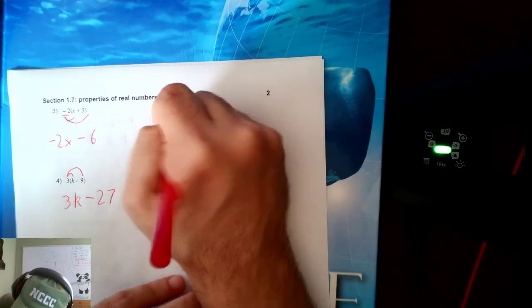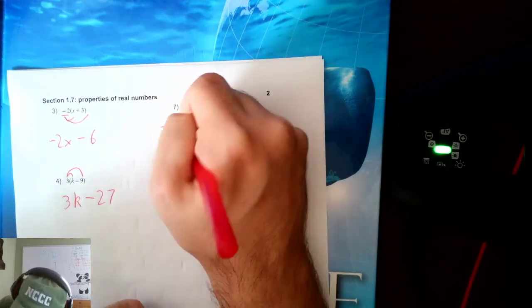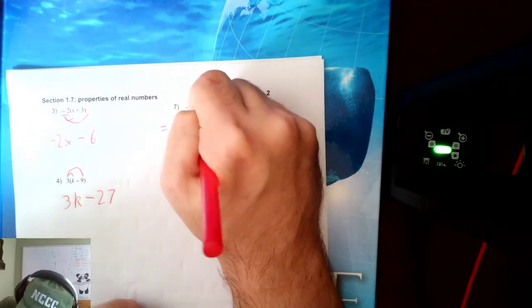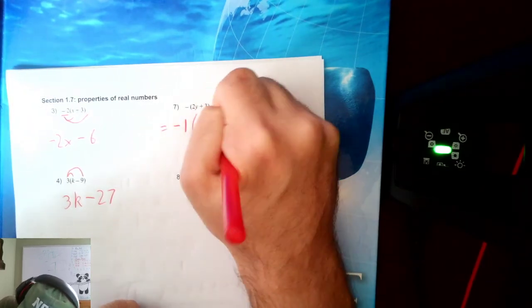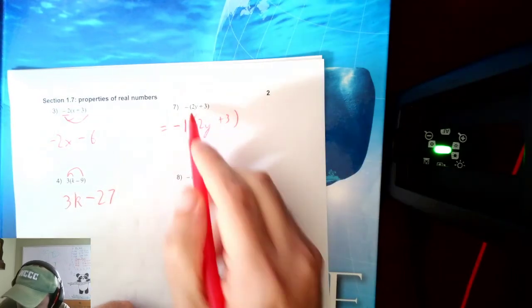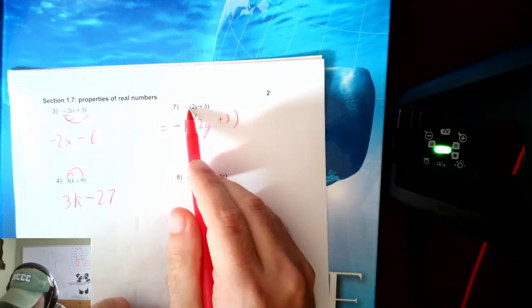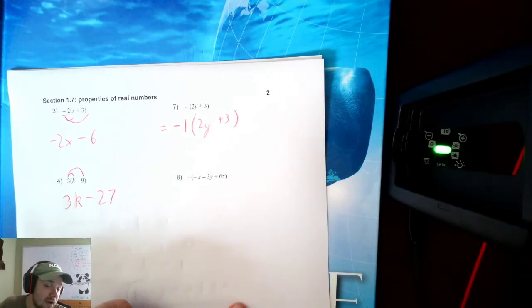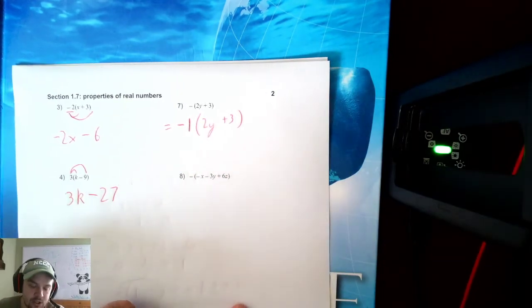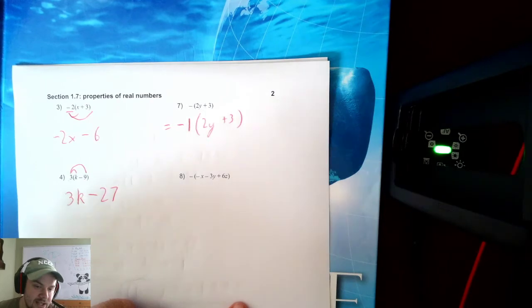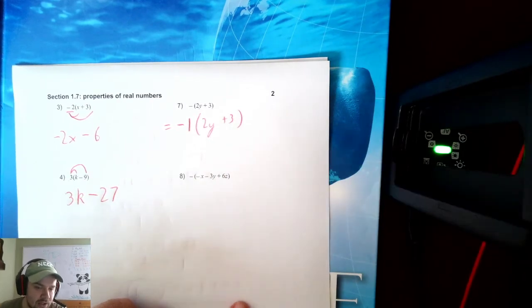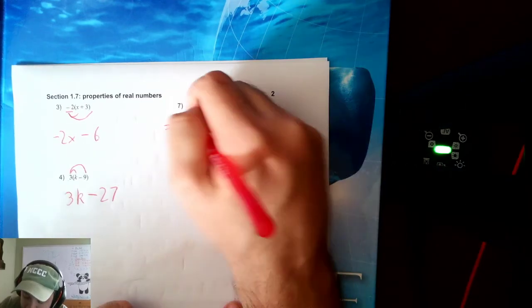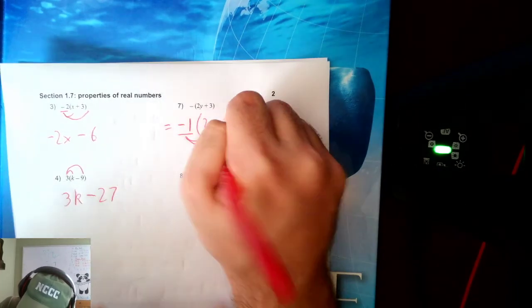Number 7. Negative parentheses 2Y plus 3. There's actually a hidden 1 hiding right there. Whenever you see a negative sign floating down from parentheses, there's actually a 1 hidden there. Because multiplying by 1 doesn't change the value. So we don't write the 1 until we need to use it. That's just mathematical notation. If we don't need to use it, we're not going to write it. But now we want to distribute.